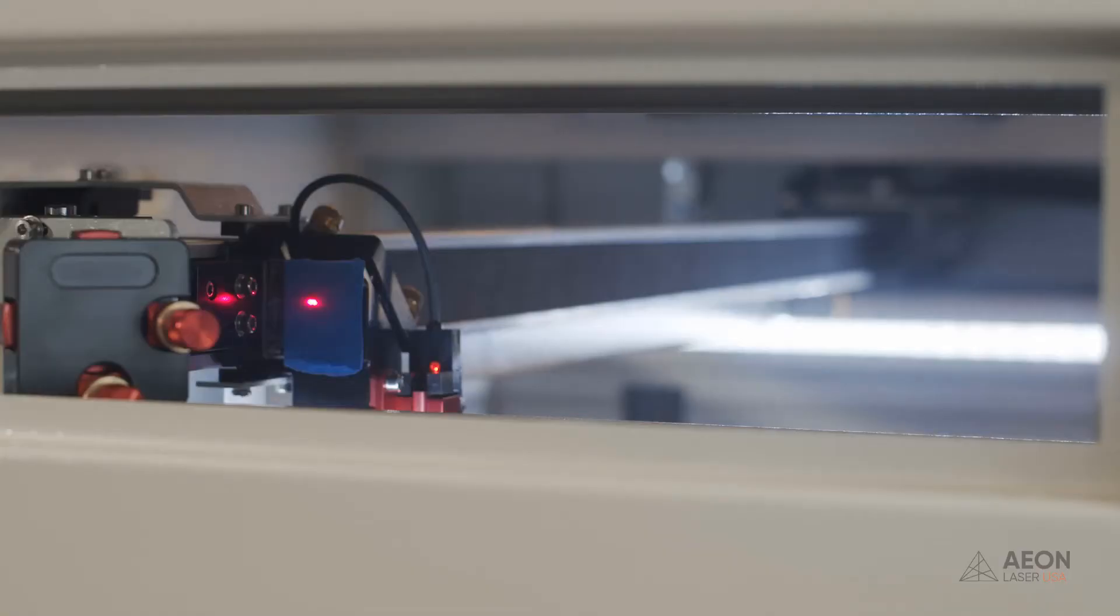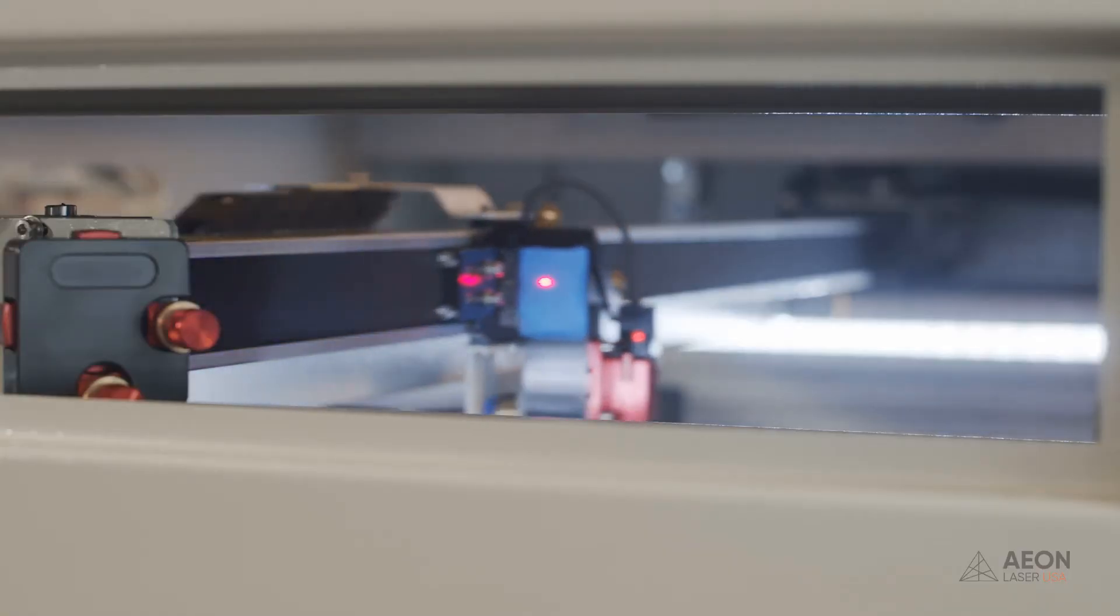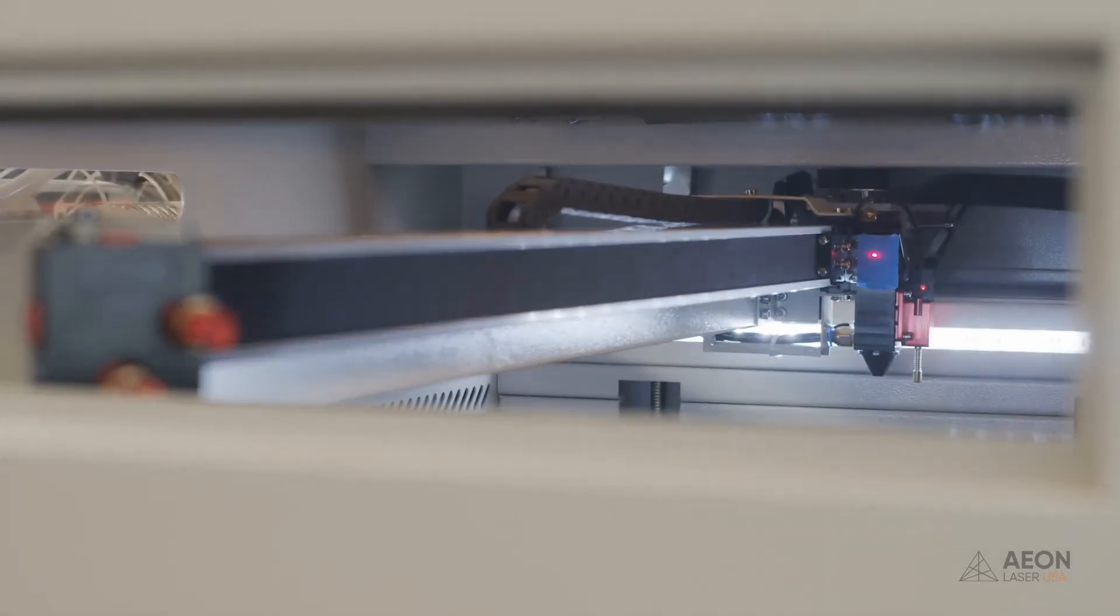Now, we're going to jog the laser head all the way to the right. You want to make sure the runner's coming straight down the baseline. It needs to hit in the exact same spot. If it doesn't, we have to go back and adjust mirror number two. So I'll hit pulse again, and let's see where it ends up.